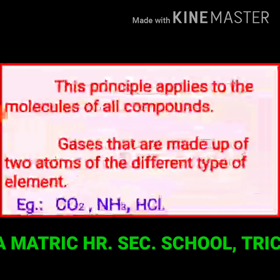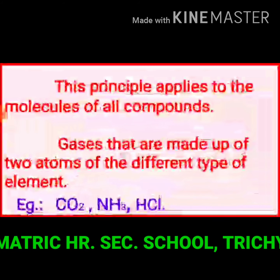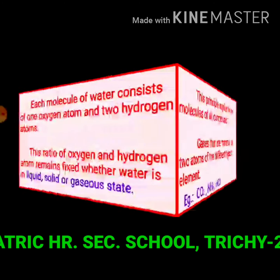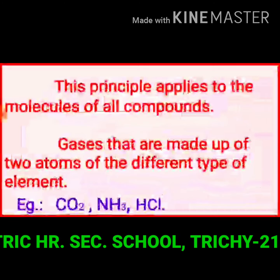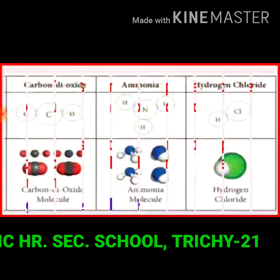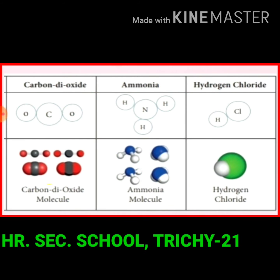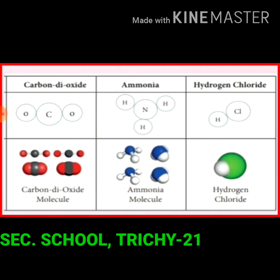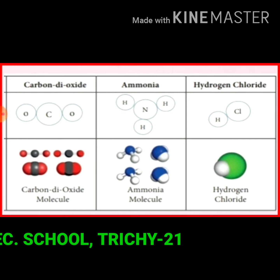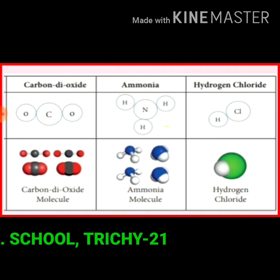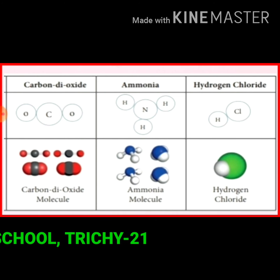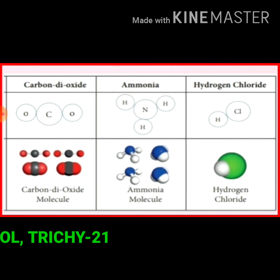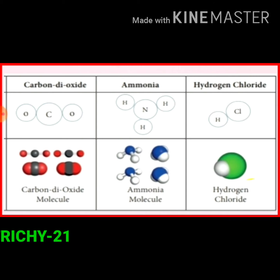Gases that are made up of two atoms of different types of elements. Examples are carbon dioxide, ammonia, and hydrogen chloride gas. Carbon dioxide consists of one carbon atom and two oxygen atoms. Ammonia molecule is formed by one nitrogen atom with three hydrogen atoms. In hydrogen chloride, one hydrogen atom combines with one chlorine atom.